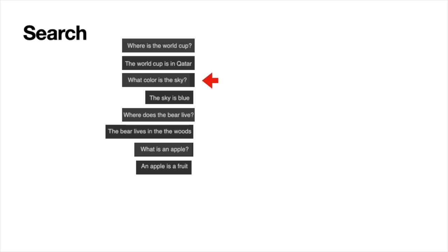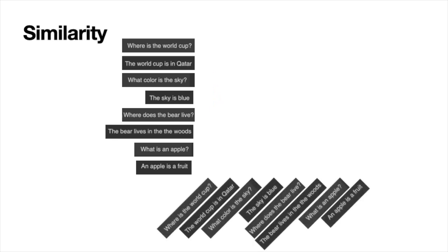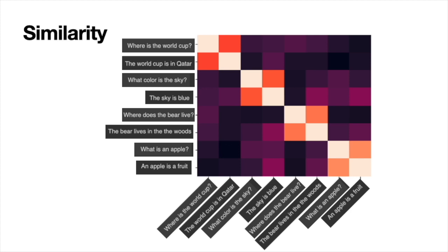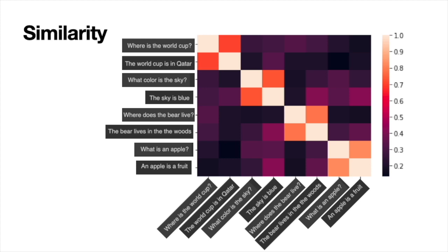Now let's look at an application of similarity: search. Take these 10 sentences and a question: 'What color is the sky?' A good search model would find the answer 'The sky is blue.' We'll find it using similarity. First, let's make a table with all the cosine similarities between these sentences, scaled from zero to one. Every element on the diagonal is one because the similarity between a sentence and itself is always one. Some numbers are large, around 0.7, and the rest are very small, and those large numbers correspond to the similarity between each question and its corresponding answer.